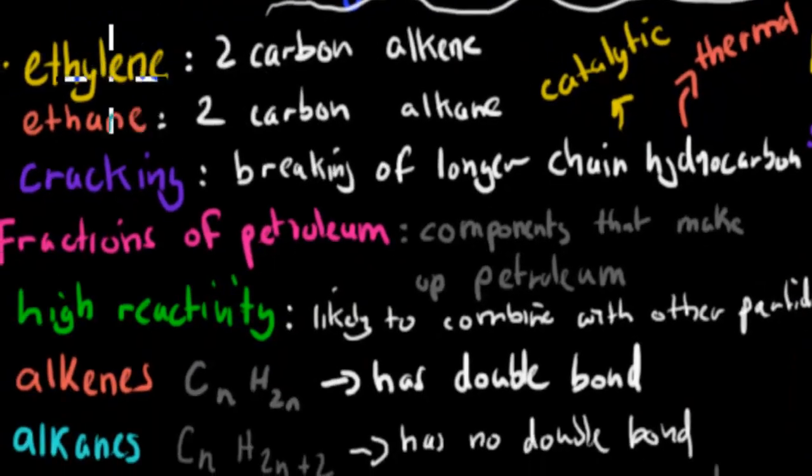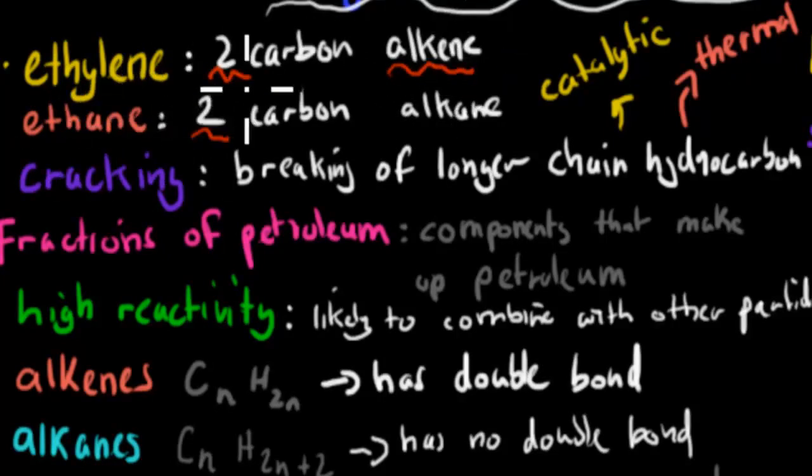First we have ethylene. Ethylene is a two-carbon alkene. I'll go over what an alkene is in a second. Ethane, on the other hand, is a two-carbon alkane. So eth stands for two, but it's an alkane. I'll go over that one as well in a second.